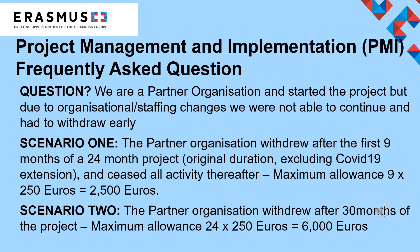For a partner organisation, Scenario 1 and 2 outline the maximum allowance based on unit costs of 250 euros per month depending on circumstances. Any COVID-19 extension would be covered by an approved amended grant agreement previously signed by your legal representative. If you withdrew early, please provide your withdrawal date in the summary box for administrative purposes.